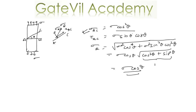Looking at Sigma AC, which was Sigma cos squared theta, the maximum value will be at theta equal to 0. So the maximum normal stress will be on the plane at angle 0 degrees to the horizontal — that means plane AB itself will have the maximum normal stress, and the value will be equal to Sigma.